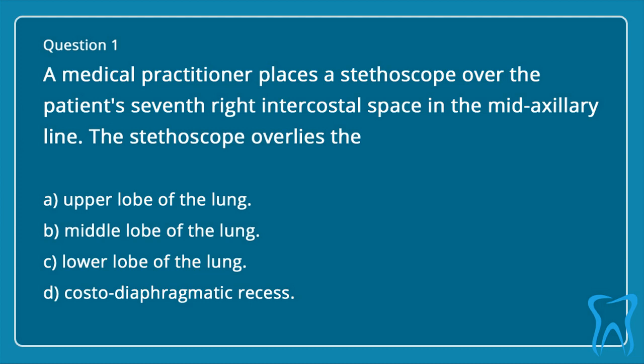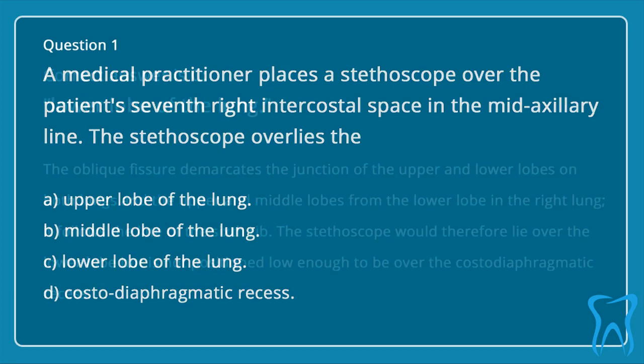The stethoscope overlies the: a. Upper lobe of the lung. b. Middle lobe of the lung. c. Lower lobe of the lung. d. Costodiaphragmatic recess.